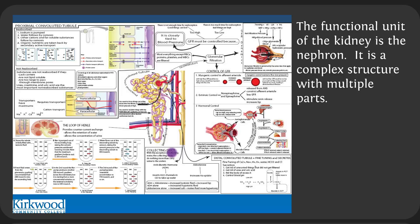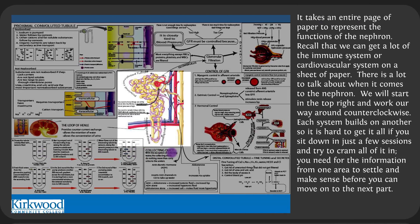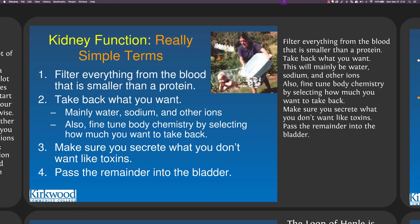The functional unit of the kidney is the nephron. It's a complex structure with a lot of parts and functions — it takes an entire page of paper to represent. There are two million nephrons total, one million in each kidney. You can survive with just one kidney. We're going to start at the top right and work counterclockwise; each system builds on another, so you need information from one area to settle before moving on. You need to understand GFR before moving to the proximal convoluted tubule, then the loop of Henle, then the distal convoluted tubule, then the collecting duct.